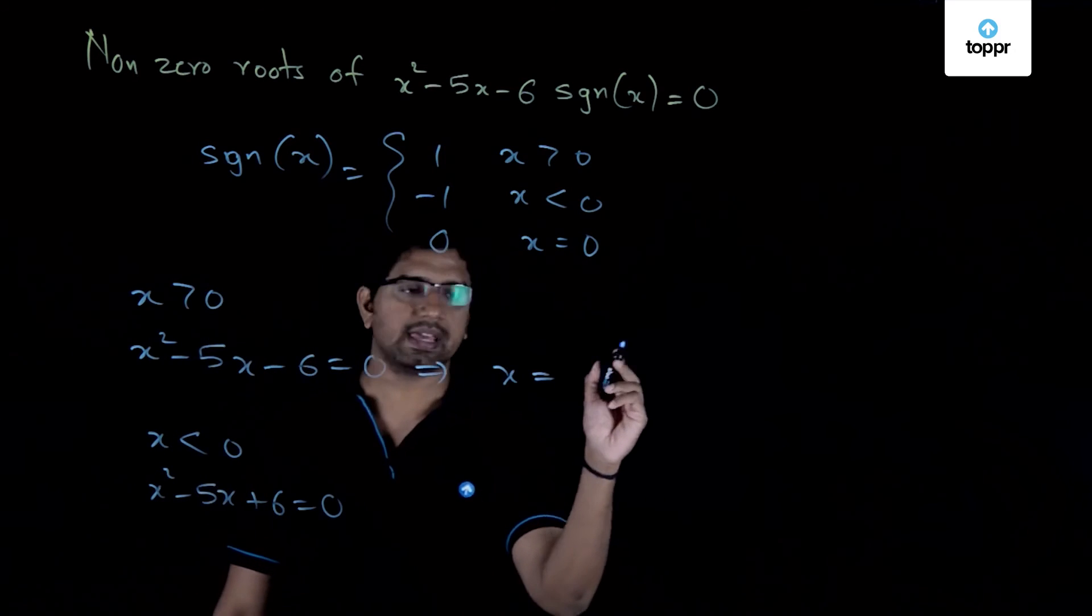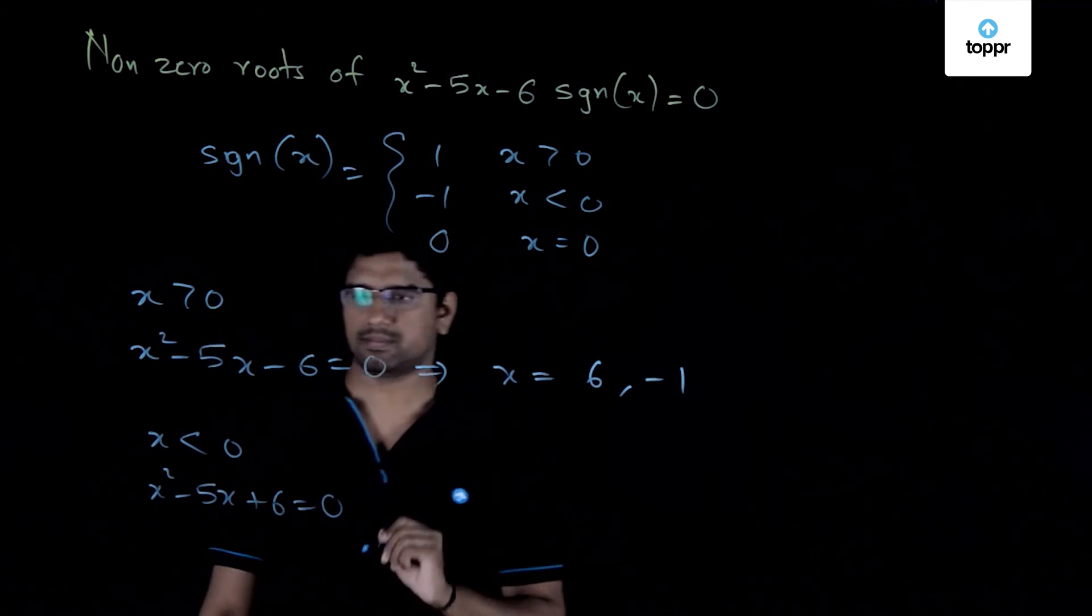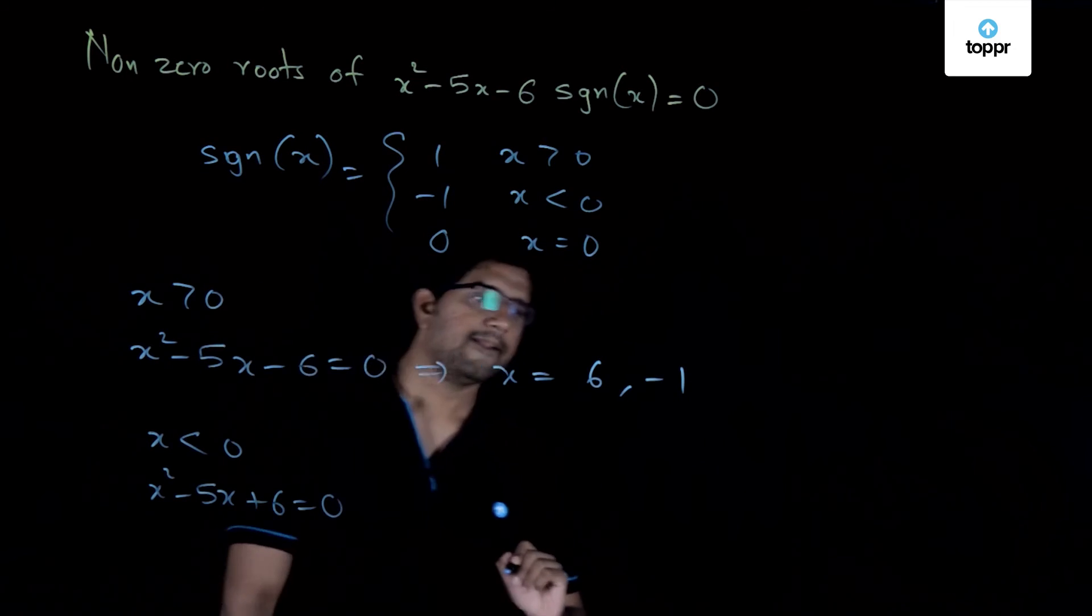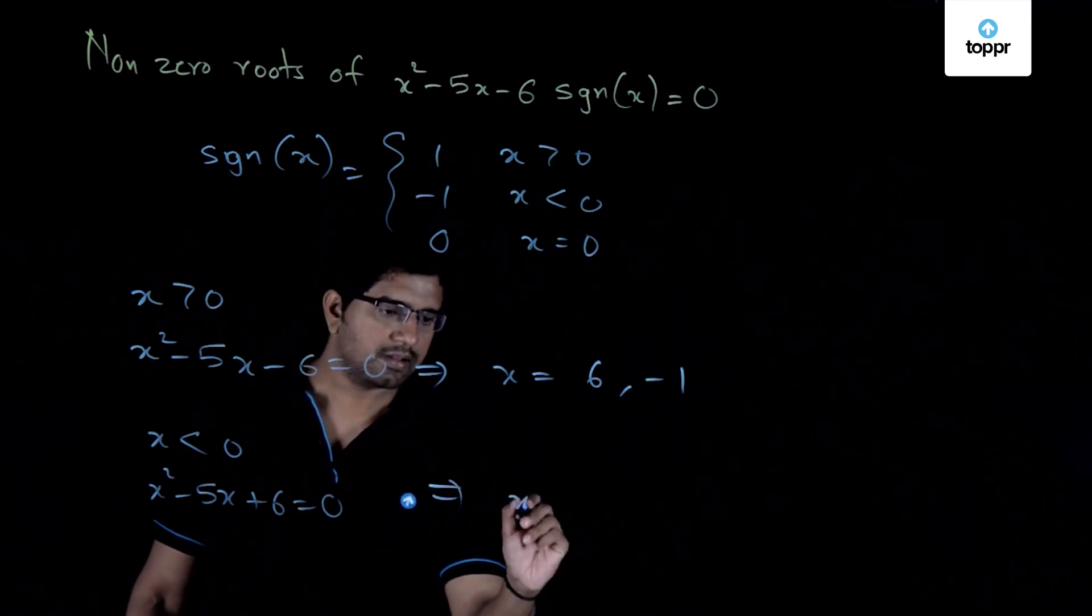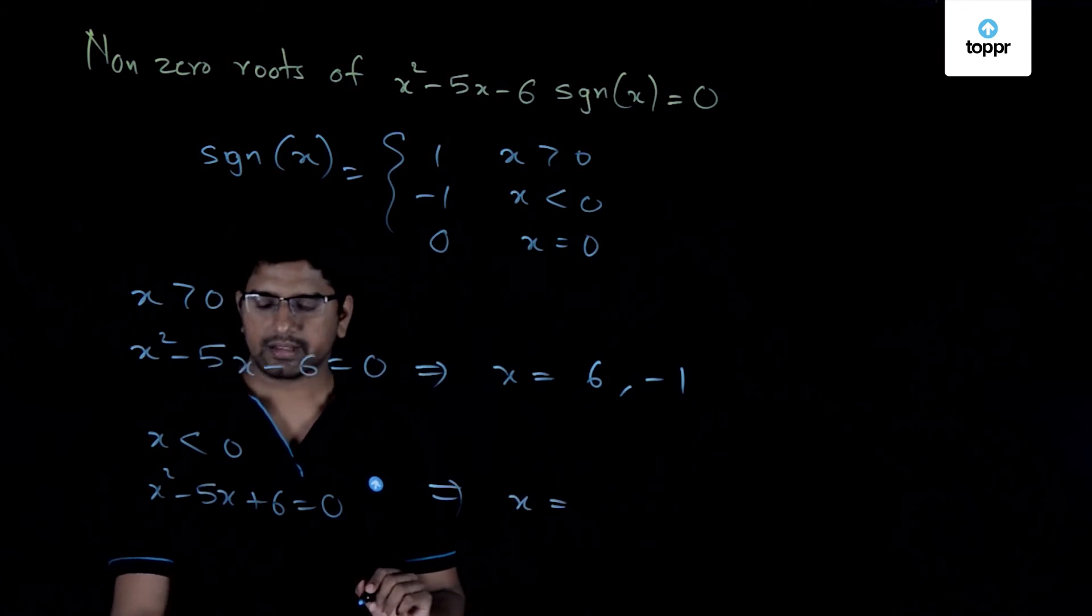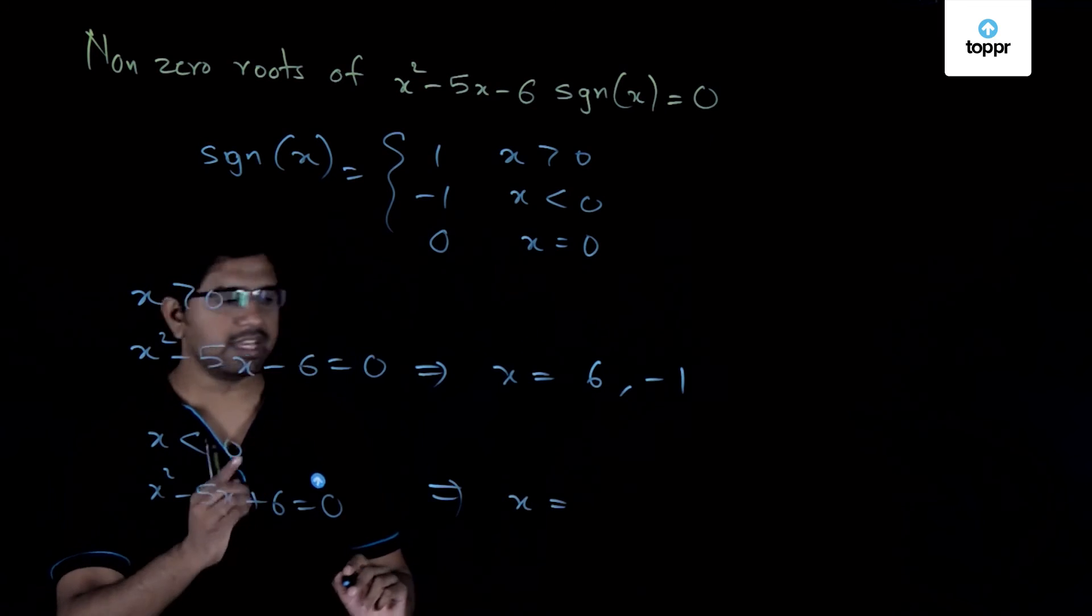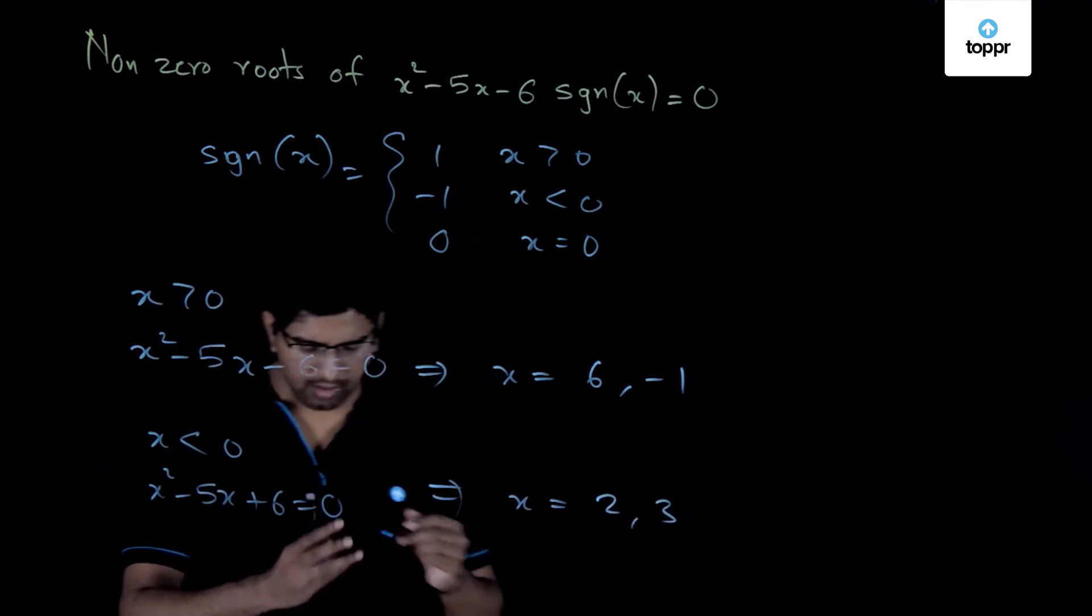So we have x is equal to 6 or minus 1. And in this case, we have x is equal to 3 or 2.